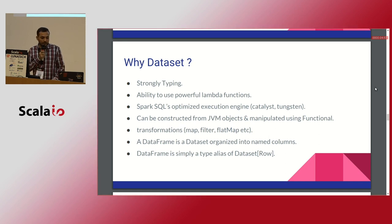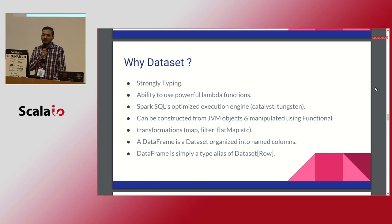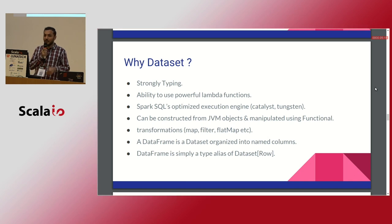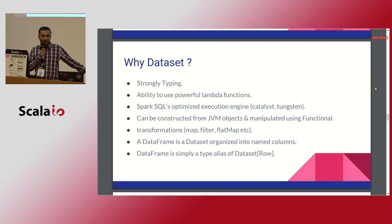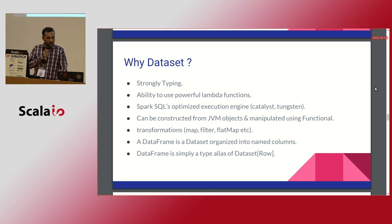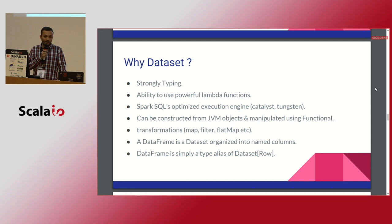Why can you choose Dataset? Because it's strongly typed, with the ability to use powerful lambda functions on top of the data. Spark SQL's optimized execution engine — Catalyst and Tungsten — can be constructed from JVM objects. At the end, Spark still generates an RDD because RDD is the primary abstraction in Spark — a very efficient and highly optimized RDD submitted to the JVM. You can do transformation, map, filter, and flat map.